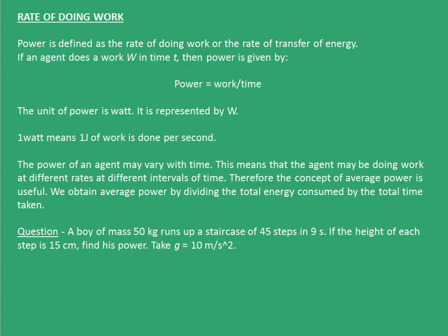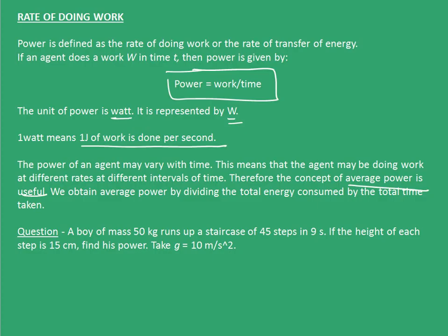Now, let's move on to rate of doing work. Rate of doing work, or in other words power, is defined as the rate of transfer of energy. If an agent does work W in time t, then power is given by the formula P = W/t. The unit of power is watt, represented by the letter W. 1 watt means 1 joule of work is done per second. The power of an agent may vary with time, so the concept of average power is useful. We obtain average power by dividing the total energy consumed by the total time taken.